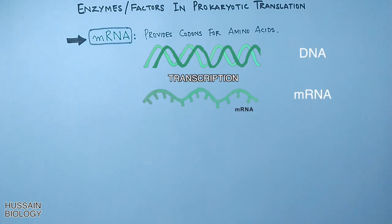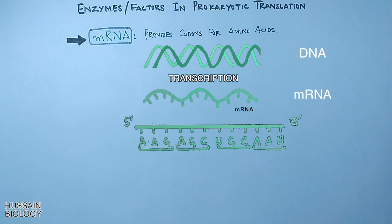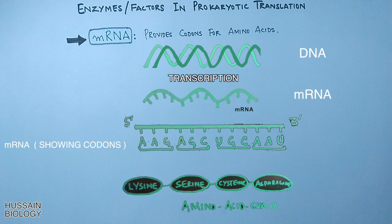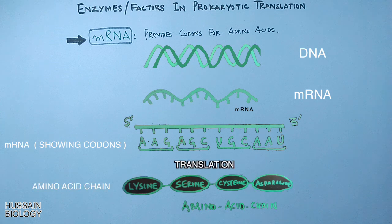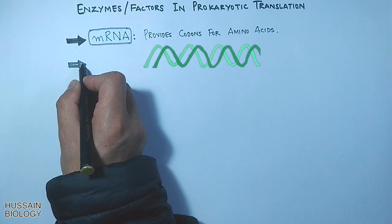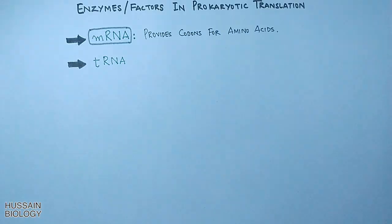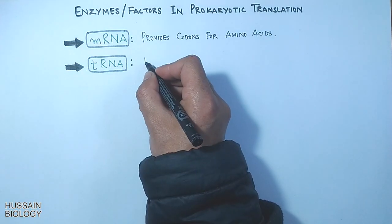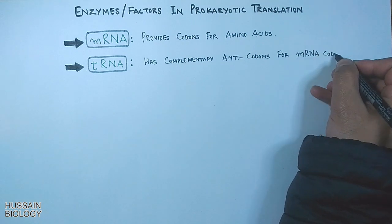As shown in the diagram, the information now present with the mRNA molecule is translated into protein during the process of translation, where codons code for specific amino acids which later form the proteins. Then we have the tRNA molecule, which is the transfer RNA — it has complementary anticodons for mRNA codons.